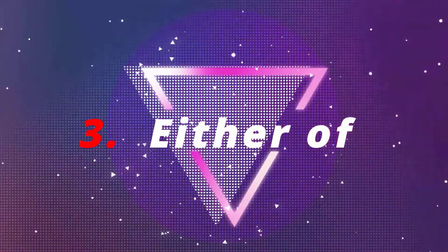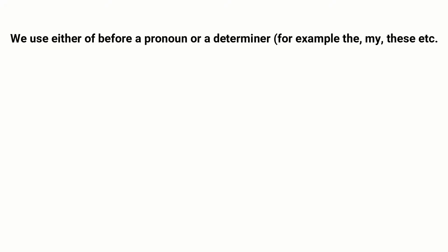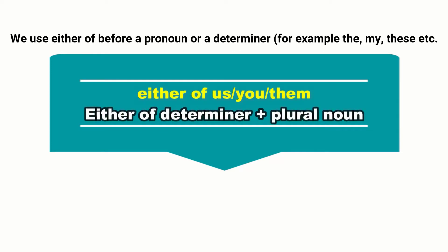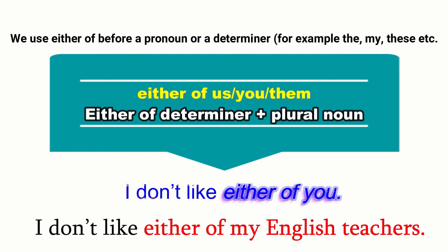Number 3: Either of. We use 'either of' before a pronoun or determiner — for example: the, my, these, etc. Either of us, you, them. Either of determiner plus plural noun. For example: I don't like either of you. I don't like either of my English teachers.